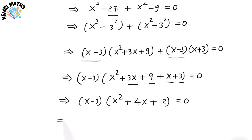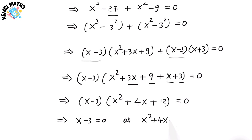Therefore we get two equations: x − 3 = 0, and x² + 4x + 12 = 0.